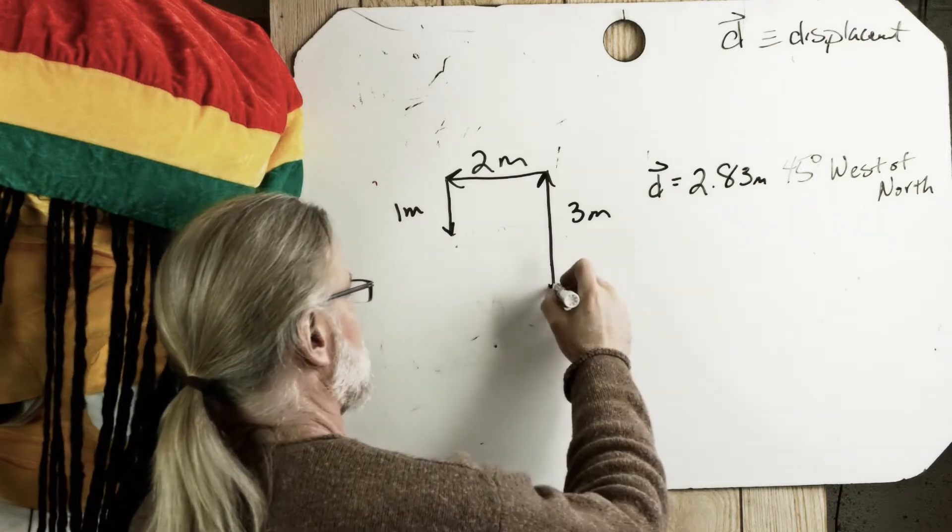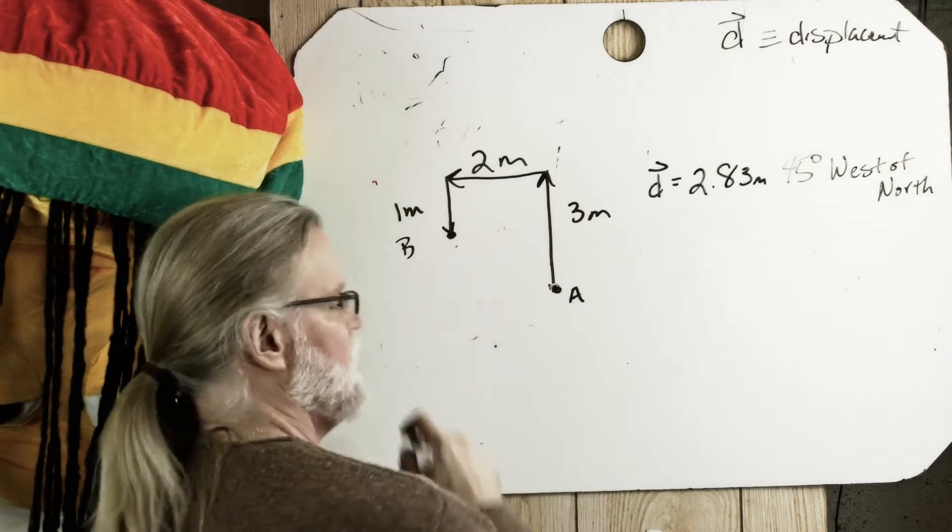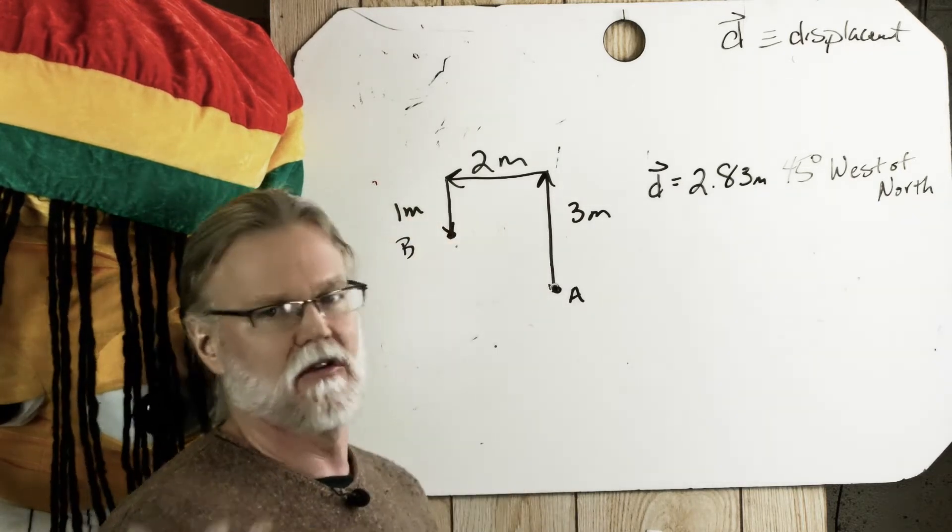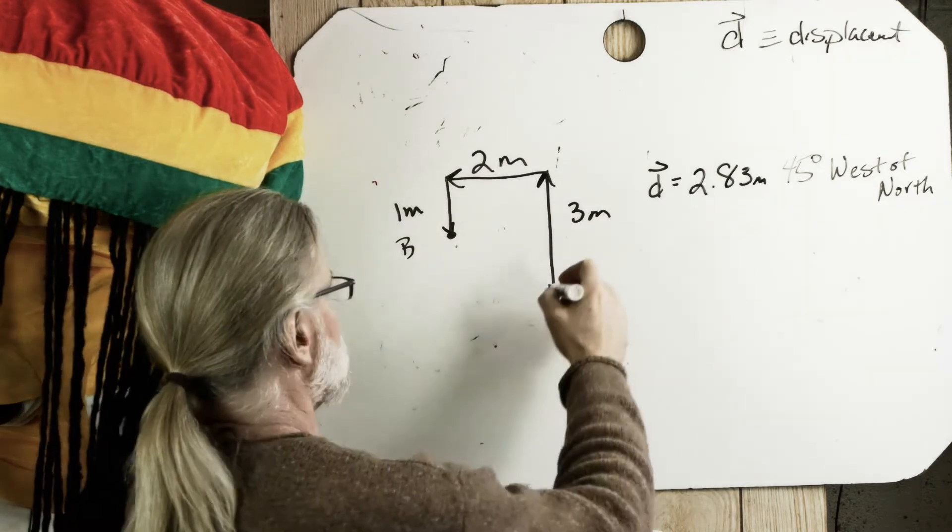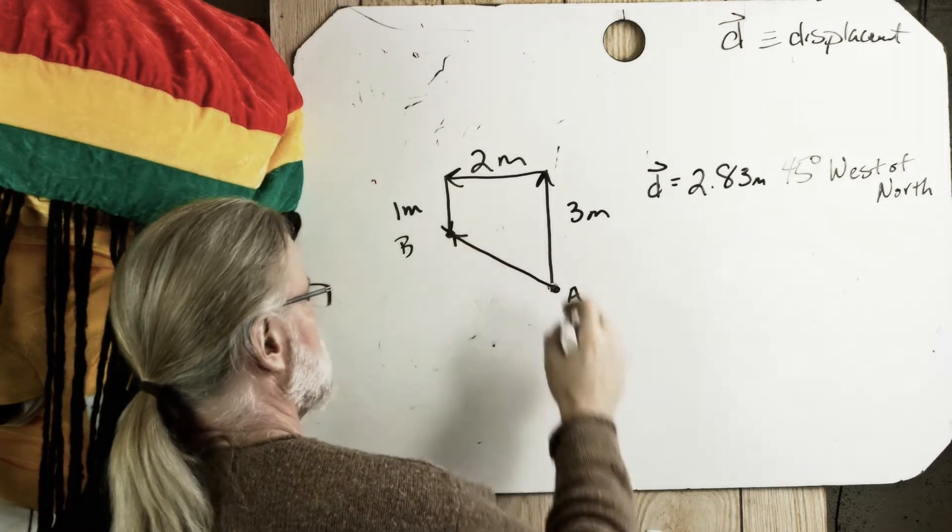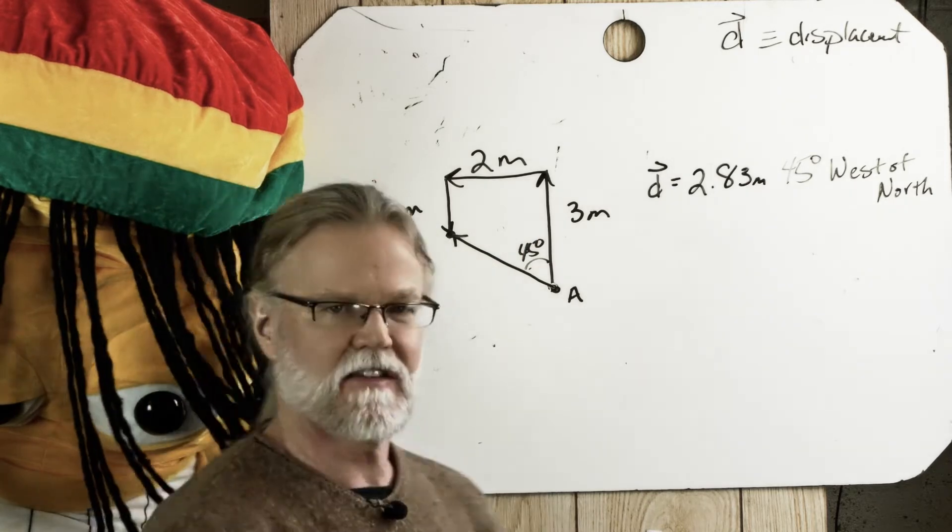So she started here at A, and she ended at B. We had a scale diagram. Now this is just a sketch. Sometimes we sketch, sometimes we draw a scale diagram. So here we have, and she went from here to here, and this is 45 degrees. That's the displacement.